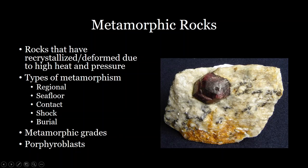A porphyroblast is a crystal that develops within a metamorphic rock because that crystal structure is a little easier to crystallize than the surrounding material. A good example is a large garnet — garnet is fairly easy to crystallize during metamorphism, so you can have these larger crystals develop within the rock.